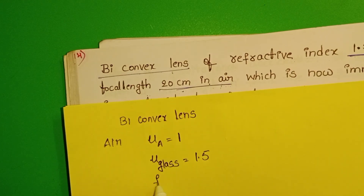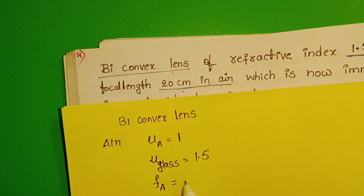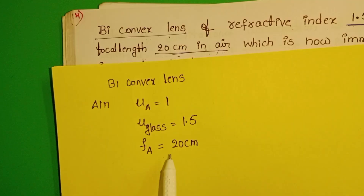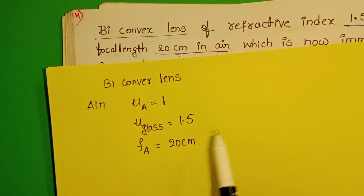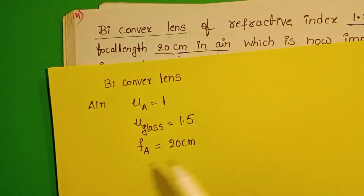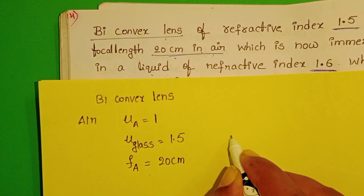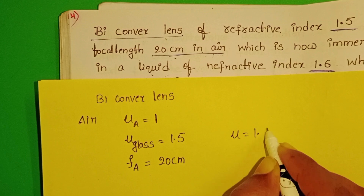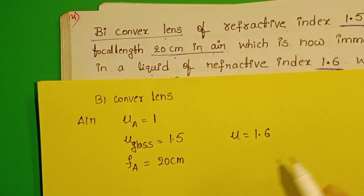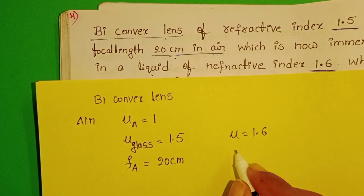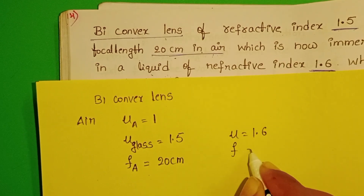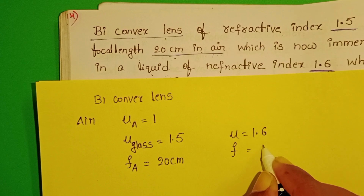The focal length of the lens when it is placed in air is equal to 20 cm. Now this lens is placed in some other medium of refractive index 1.6, and in this medium we have to find out the focal length of the lens.